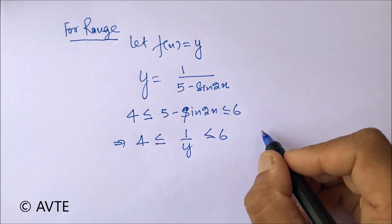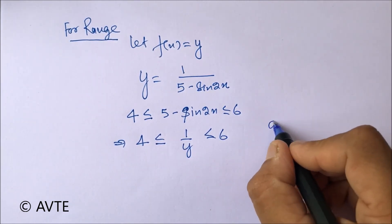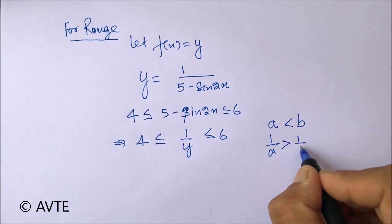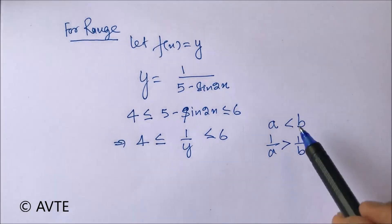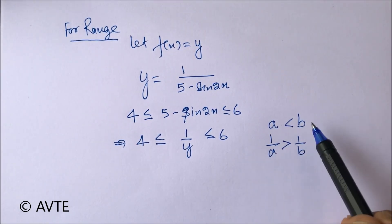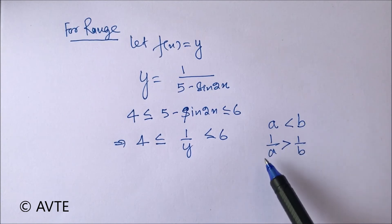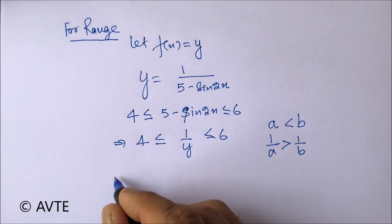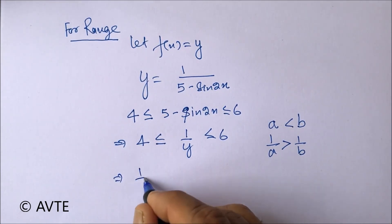There is a rule for inequalities that if two quantities are positive, then their reciprocal will change the inequality. That is, if a is less than b and both are positive or both are negative, then their reciprocal will reverse the inequality sign. So now if I take the reciprocal, this will affect the inequality.